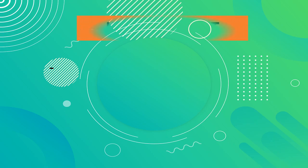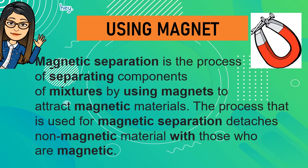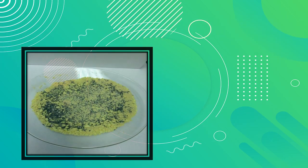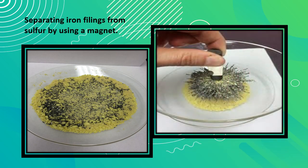Let's move on to using a magnet. Magnetic separation is the process of separating components of mixtures by using magnets to attract magnetic materials. The process detaches non-magnetic material from magnetic material. An example is separating iron filings from sulfur by using a magnet.